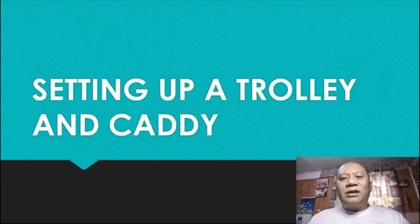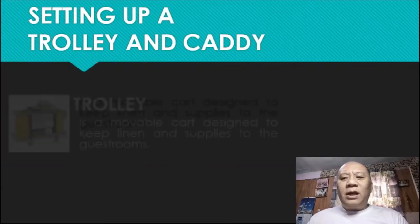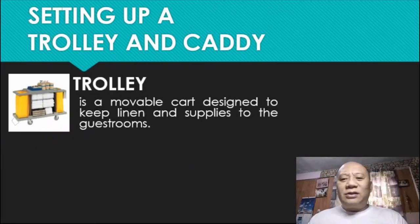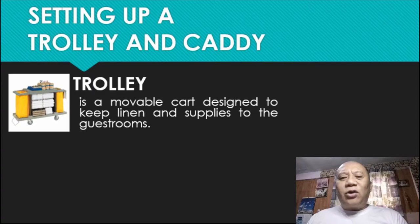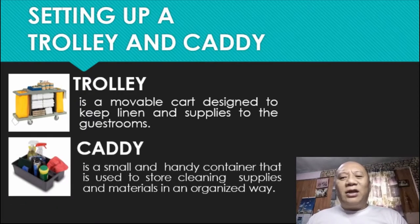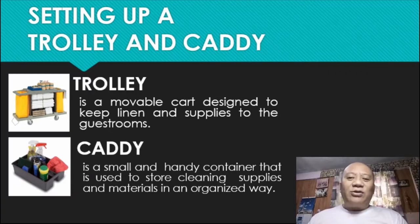Our next topic is about setting up a trolley and caddy. A trolley is a mobile cart designed to keep linen and supplies for the guest rooms. It holds items such as plastic bags for garbage and hygiene supplies, cleaning agents like detergent and chemicals, clean equipment, and varieties of cloths. A trolley also gathers supplies from guest rooms. The difference between a trolley and a caddy is that the caddy is a small, handy container used to store cleaning supplies and materials in an organized way.